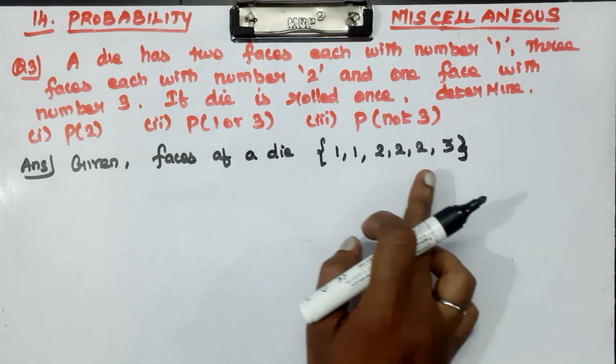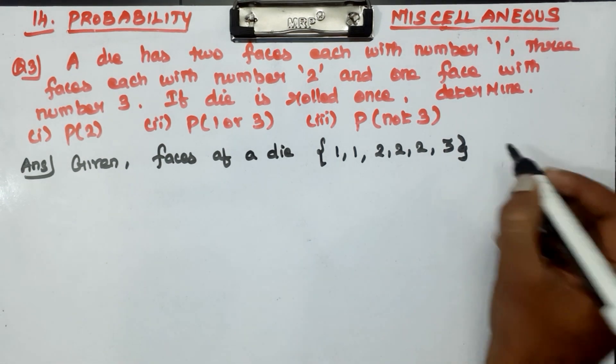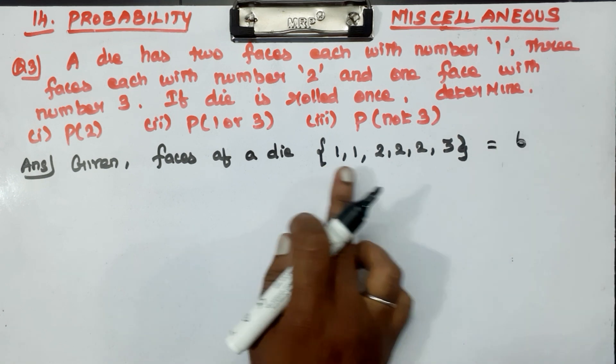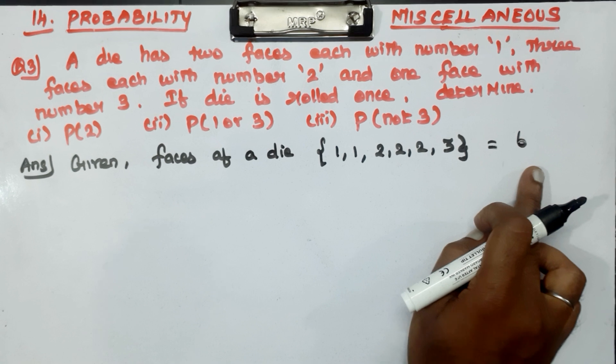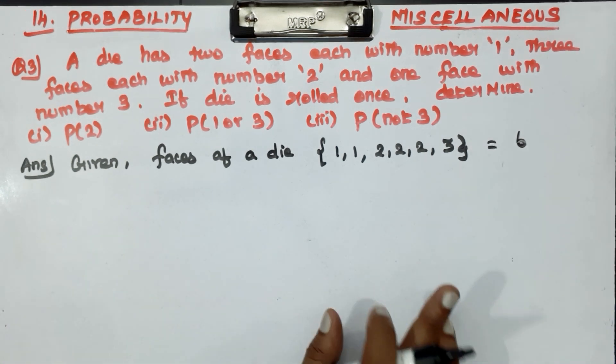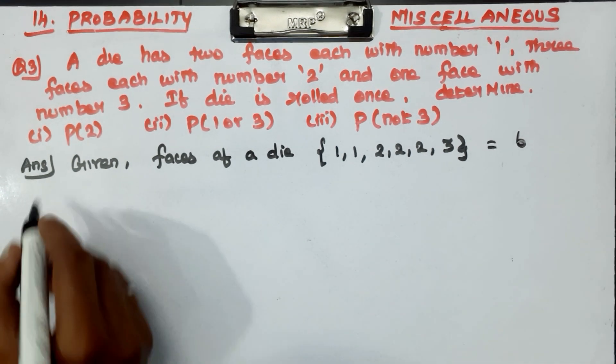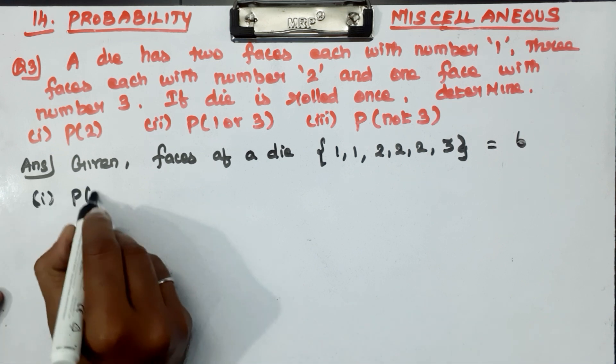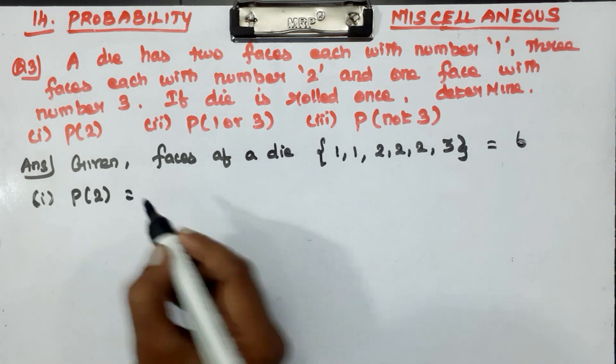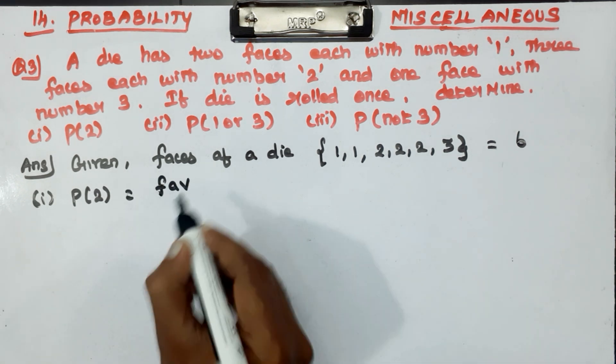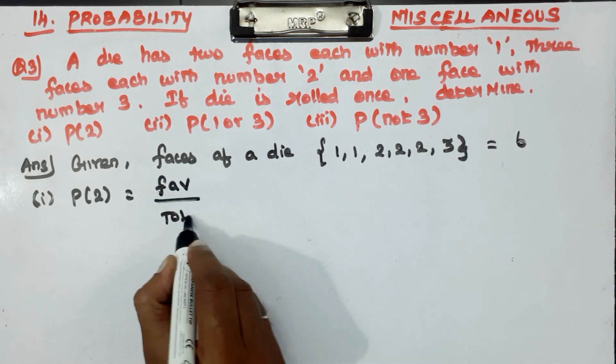So we have 1, 2, 2, 2, 3. Total number 6. Faces are 1, 1, 2, 2, 2, 3. Favorable outcome divided by total outcome.